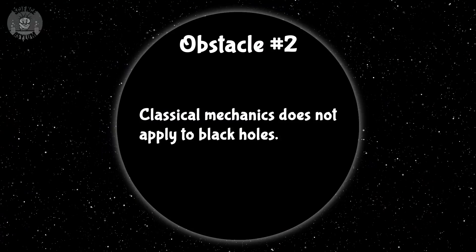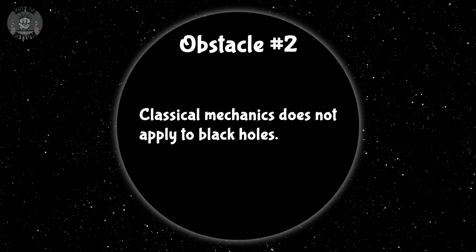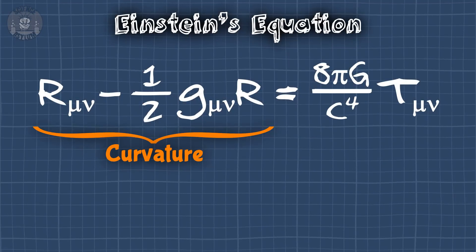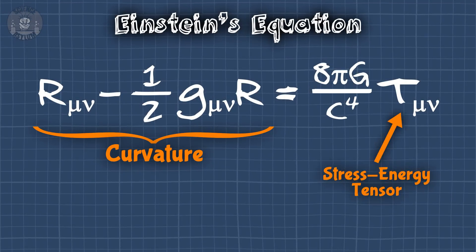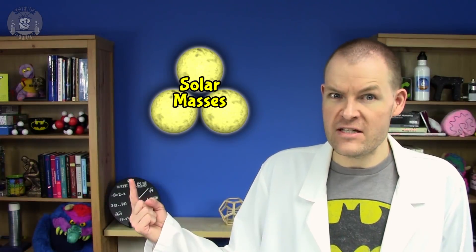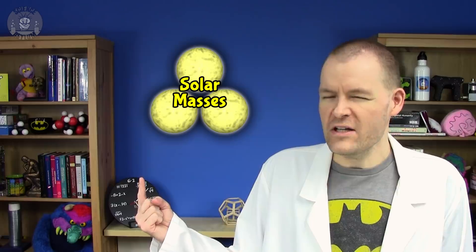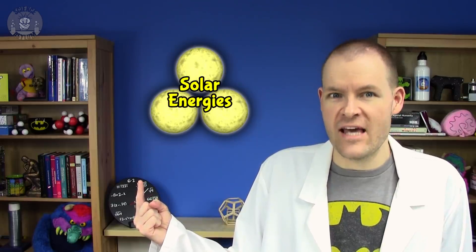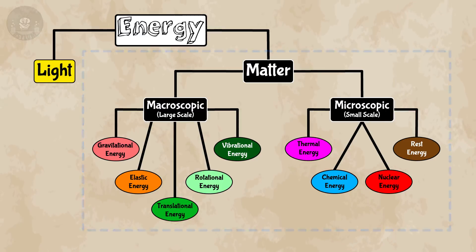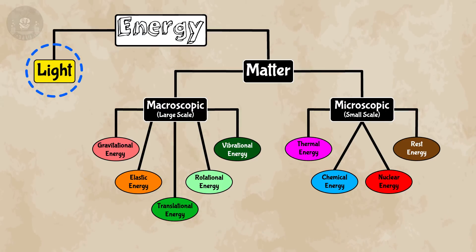Obstacle 2. Classical mechanics does not apply to black holes. That means we have to be careful about what we mean by mass — mass can get confusing real fast. Gravity is the curvature of space-time and that's caused by energy, so it's better to talk about energy. So when we say we need at least three times the mass of the Sun, we're really saying we need at least three times the energy of the Sun. It doesn't have to be matter energy — it could just as easily be light energy. The same rule applies.